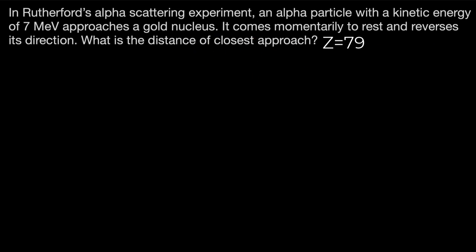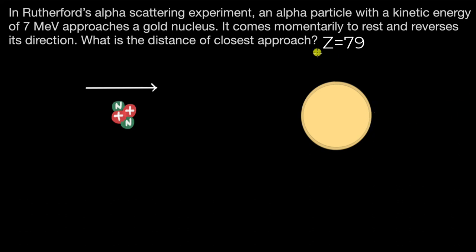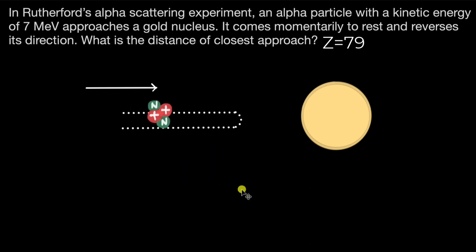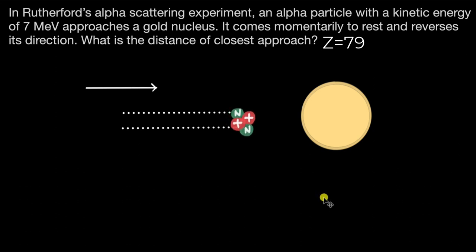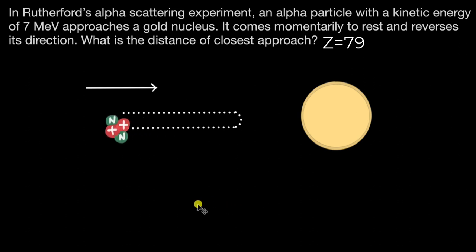We have an alpha particle which is moving because it has some kinetic energy of 7 mega electron volts, and it is approaching a gold nucleus. It comes momentarily to rest and then reverses its direction. If we draw its path, the alpha particle has a velocity moving to the right, it slows down because of repulsive forces between positive charges, comes to rest, and then reverses direction. We need to figure out the distance of closest approach.